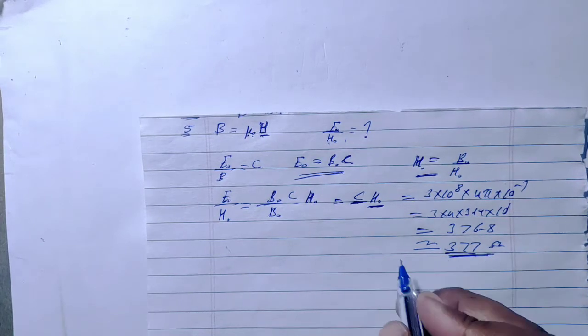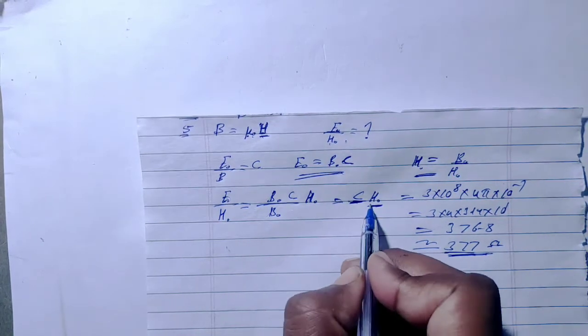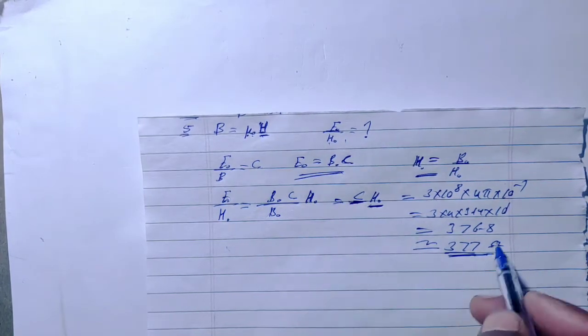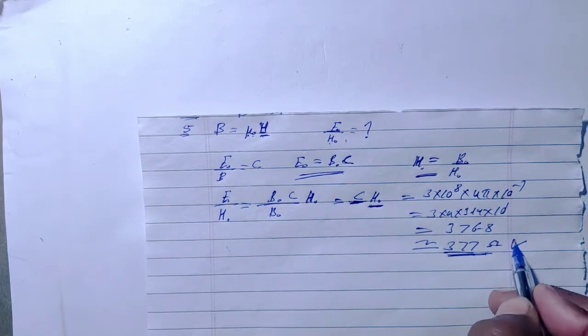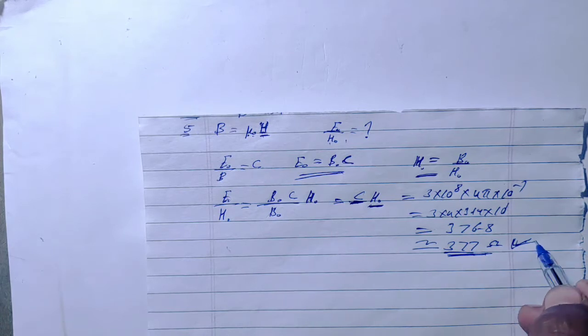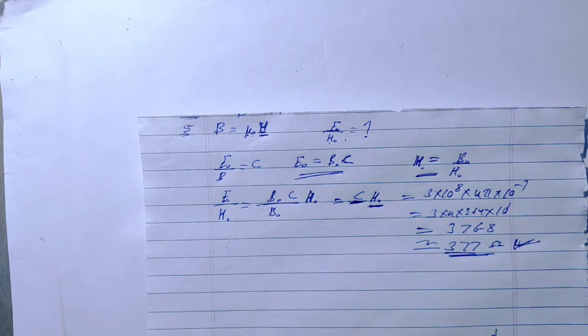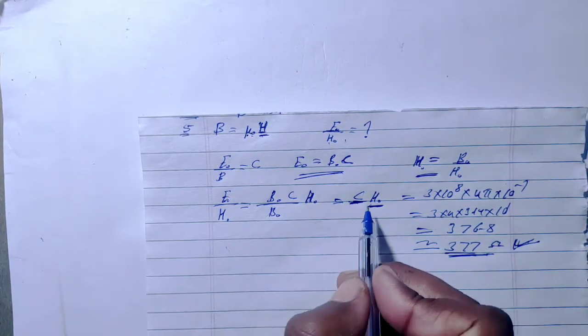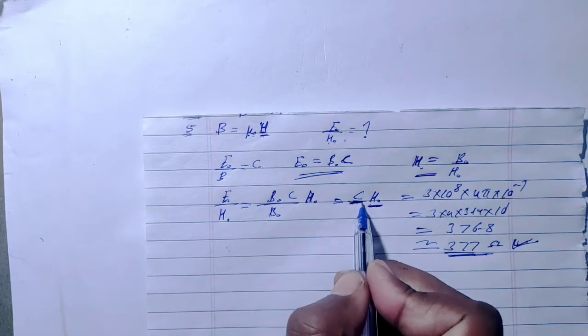This is a universal constant, and we call it the impedance of free space. Now we have to prove that its dimension is ohm — equal to resistance.